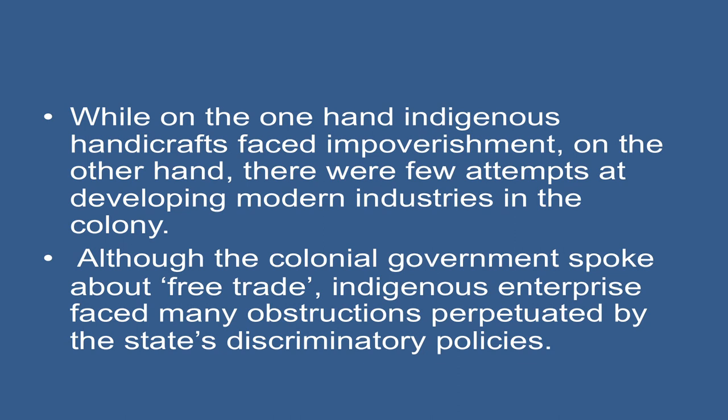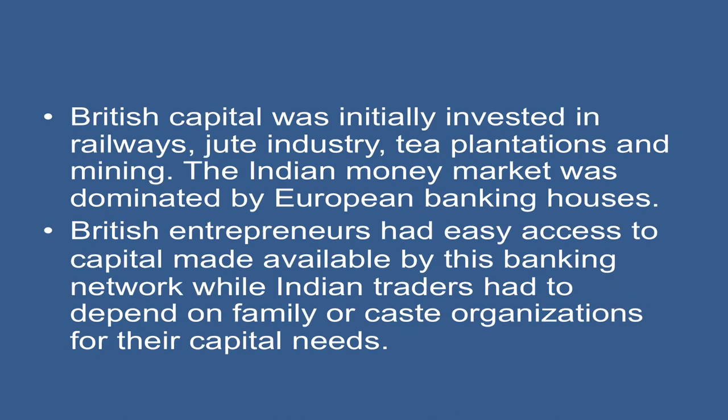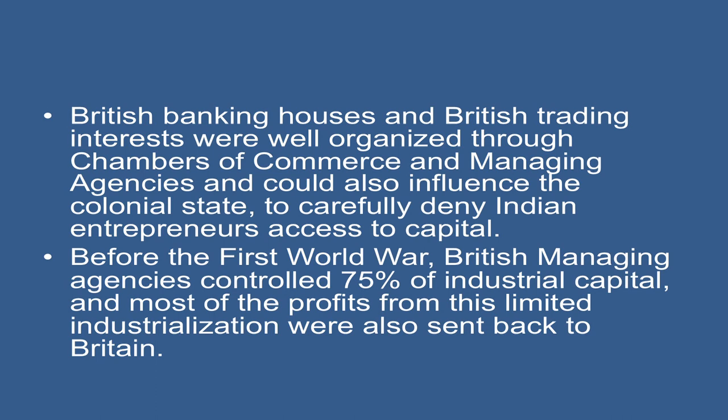Although the colonial government spoke about free trade, indigenous enterprise faced many obstructions perpetuated by the state's discriminatory policies. British capital was initially invested in railways, jute industry, tea plantations, and mining. The Indian money market was dominated by European banking houses. British entrepreneurs had easy access to capital made available by this banking network, while Indian traders had to depend on family or caste organizations for their capital needs. British banking houses and trading interests were well organized through chambers of commerce and managing agencies, and could also influence the colonial state to deny Indian entrepreneurs access to capital.